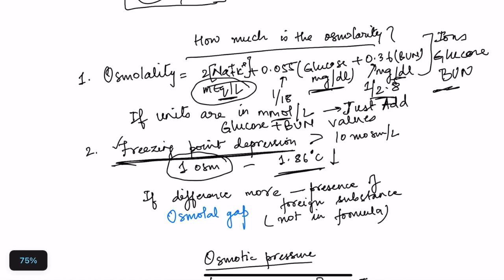If units given are in millimoles per liter, you just add all the values to get osmolality in milliosmoles per liter. In the formula, we put twice the cation concentration because we are taking anions into consideration too — one sodium has one associated anion like chloride. For glucose and blood urea nitrogen, valency is one, so milliosmoles equal millimoles.